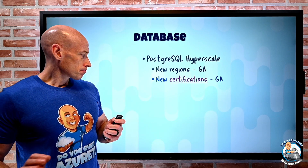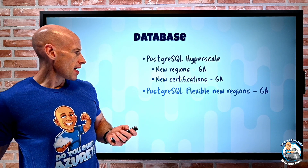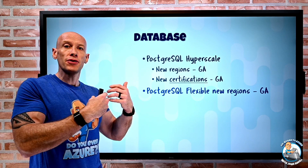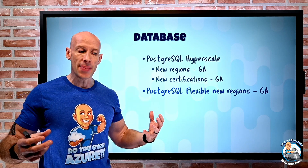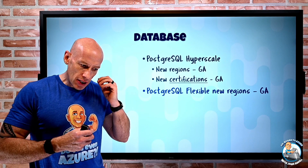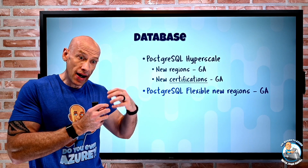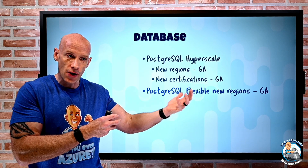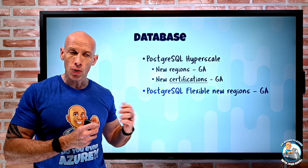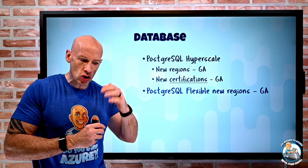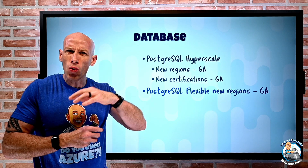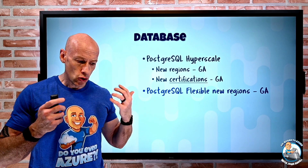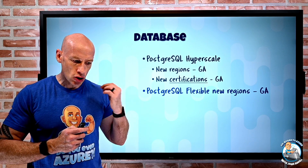Also now for Postgres SQL Flexible — the version of the managed database that's VM based, giving a lot of additional capabilities like high availability options so you can have a version ready to automatically take over, availability zone support, burstable size VMs, stop and start, and control over maintenance windows — these are also now available in new regions, specifically China East 2 and China North.